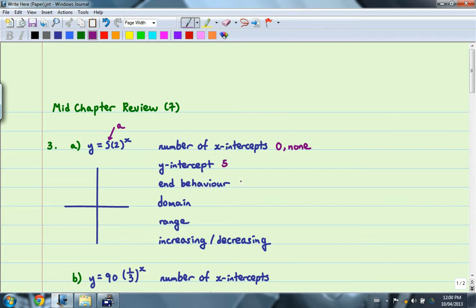The end behavior will always be from quadrant 2 to quadrant 1. The domain will be all real numbers. The range will be positive, so y will be greater than 0. And finally, in this case, B is greater than 1, so we'll have an increasing function.